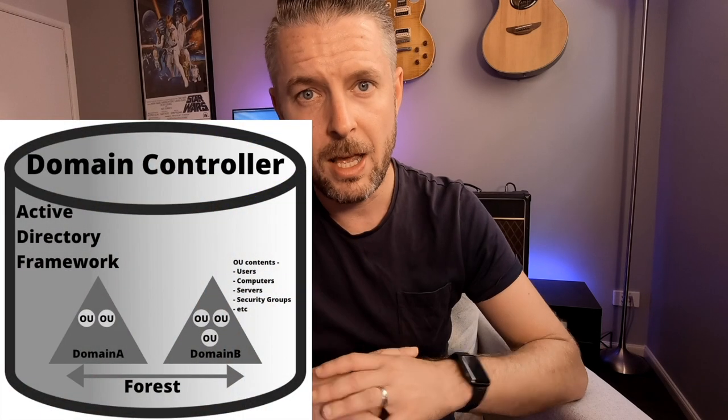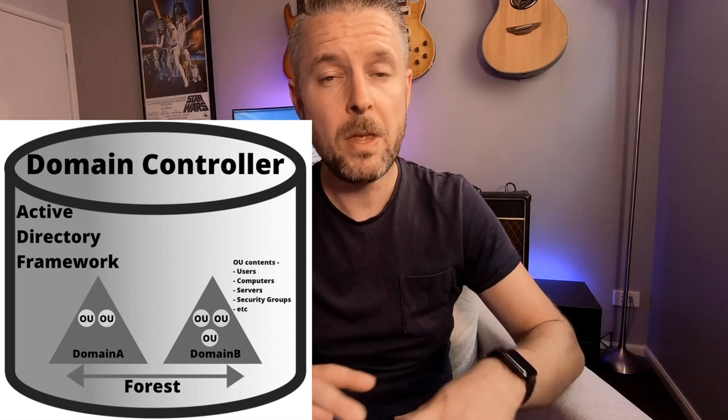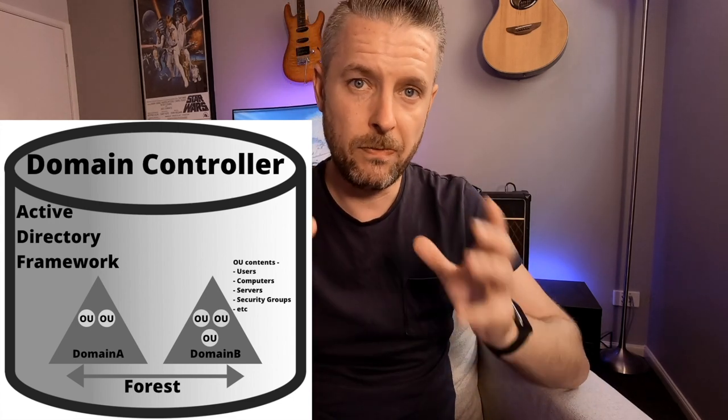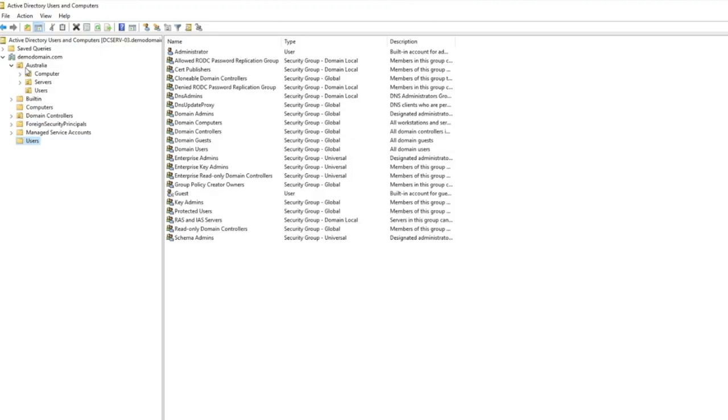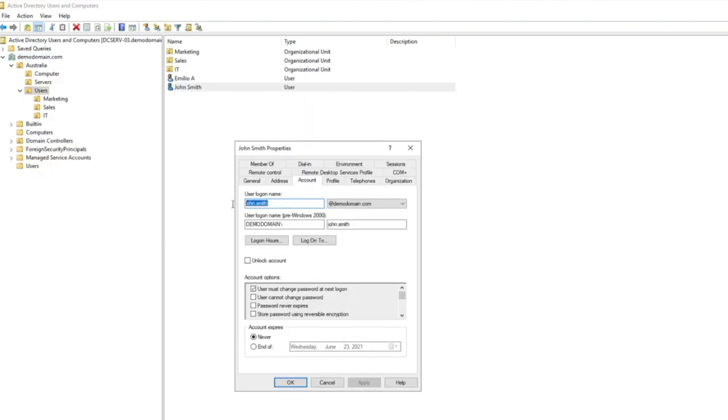You've also got what's called a forest. So you've got a forest and a domain — essentially a forest is the top level and then the domain is what sits within the forest, so you could have multiple domains within a central forest. It helps to look at a visual diagram of what this looks like. You can see an overview of the domain controller, your Active Directory, your domain, and your forest, with all of your Active Directory domains sitting within it. All of your relevant network objects communicate with your domain and are managed within Active Directory.